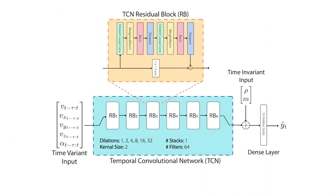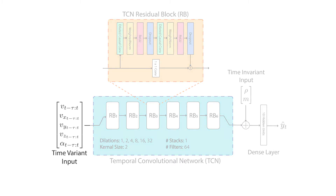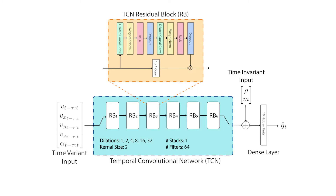We use temporal convolutional networks to capture the time-varying features, such as air velocity, while incorporating the contextual information, such as payload weight and air density. In contrast with previous methods, our model does not require segmenting flights into different regimes.